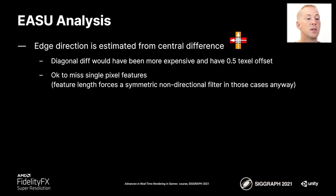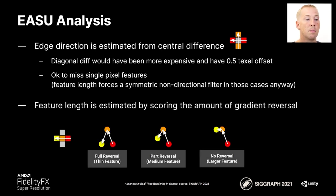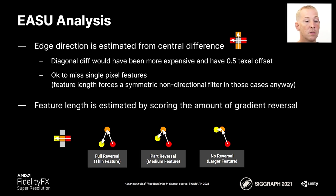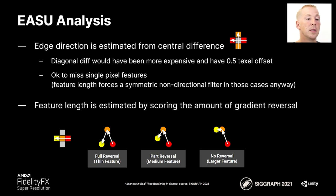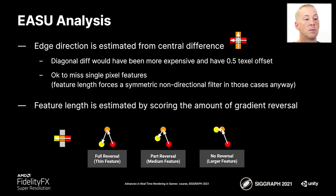Once edge direction is finished, we look at feature length. Feature length is estimated using the three texels in the horizontal and the three texels in the vertical, looking at what happens with the luma gradient. If the luma gradient has a reversal — for instance, going from black to white and returning to black — that is a full reversal and a significant probability that it is a thin feature. Whereas if there is no reversal, going from black to white and then staying white, that's probably a large feature which can have a larger filter kernel.